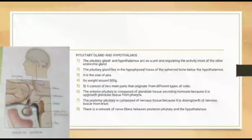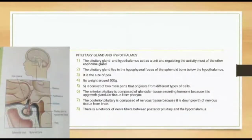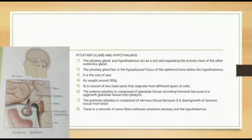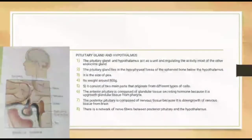The anterior pituitary is composed of glandular tissue secreting hormones, because it is an upgrowth of glandular tissue from the pharynx. The posterior pituitary is composed of nervous tissue, because it is a downgrowth of nervous tissue from the brain. There is a network of nerve fibers linking the posterior pituitary and hypothalamus.